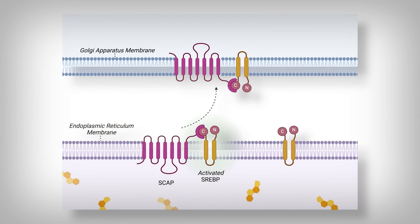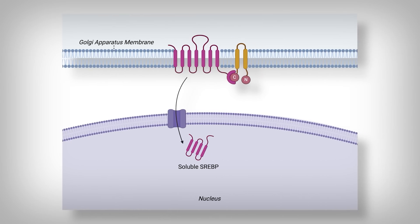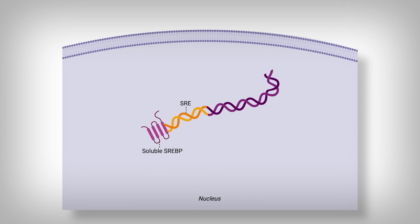When activated, SREBP is chaperoned and moved to another organelle called the Golgi apparatus by a protein called SCAP. When these proteins are embedded into the Golgi's membrane, SREBP is cleaved or cut, so a soluble, free form of the protein can now move into the nucleus of your cells. Here, it binds to many genes that contain a sequence of DNA called the sterol response element, usually found next to genes related to triglyceride synthesis and cholesterol management — called lipogenic genes — which produce enzymes that allow for more triglyceride formation. SREBP activity is context-dependent; in this dyslipidemic situation with higher blood triglycerides, it's a negative to our health.